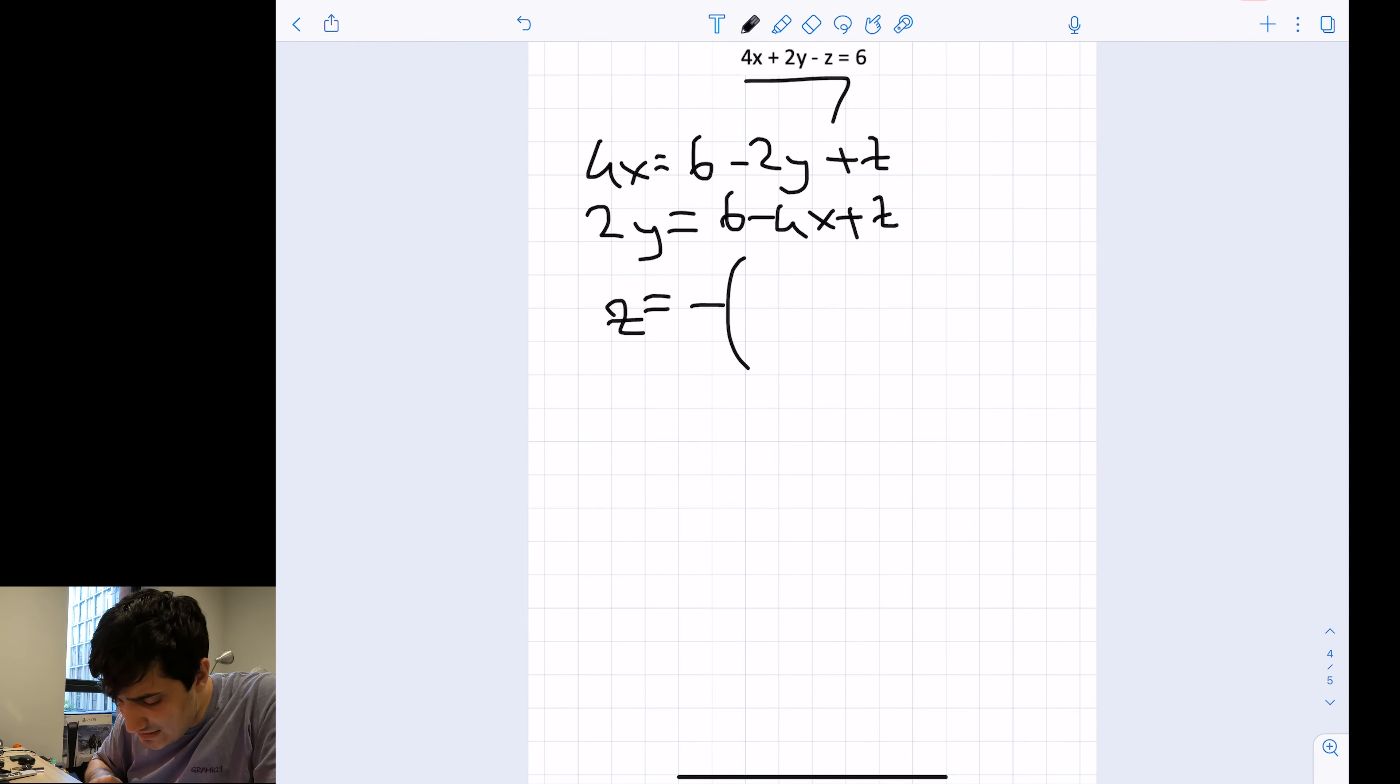You can have 2y equals 6 minus 4x plus z, or you can have z equals minus parentheses 6 minus 4x minus 2y. You can rewrite them in the same manner, but still, you have three unknowns and one equation. There is no way you can solve this question.